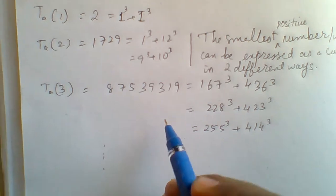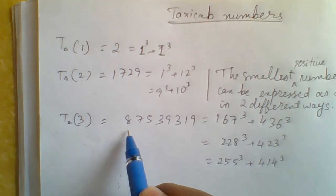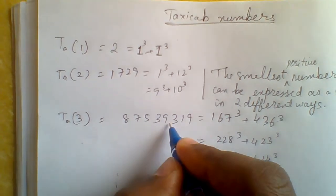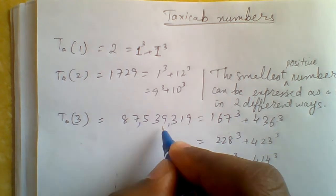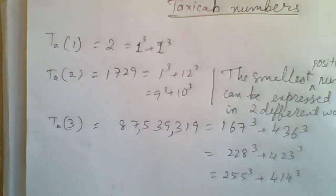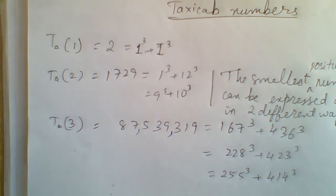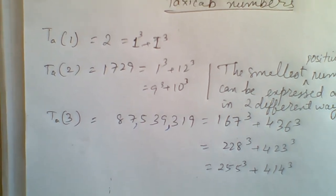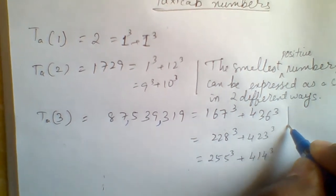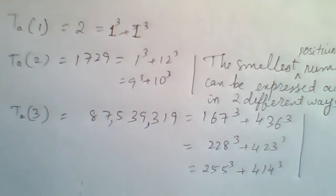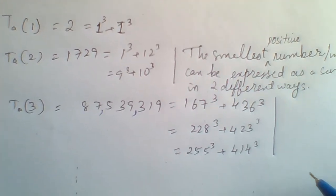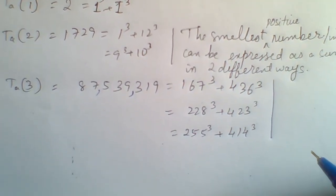The third taxicab number is 87,539,319, and as you can see I have mentioned the three possible combinations and you can easily find these on Wikipedia.